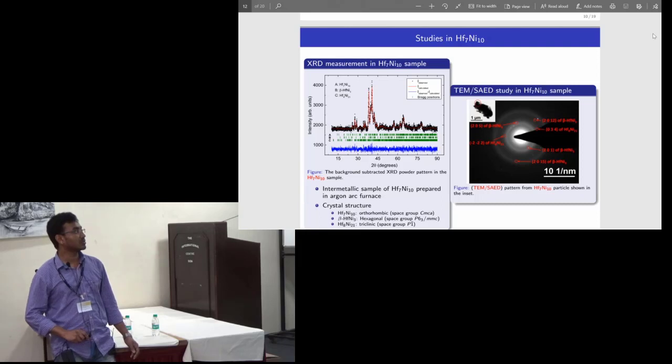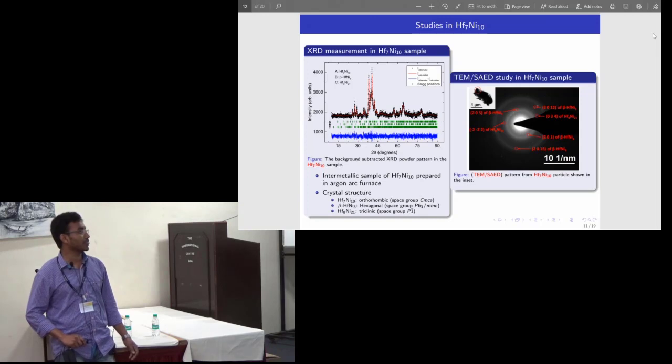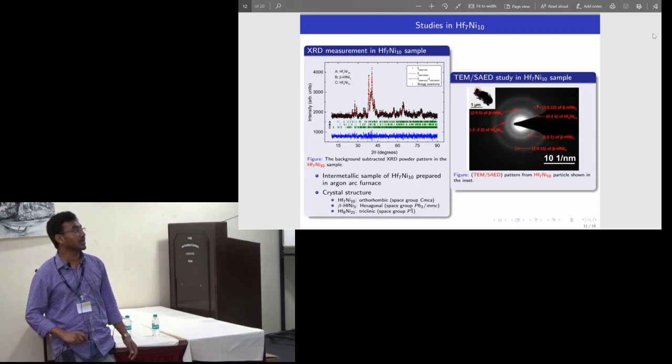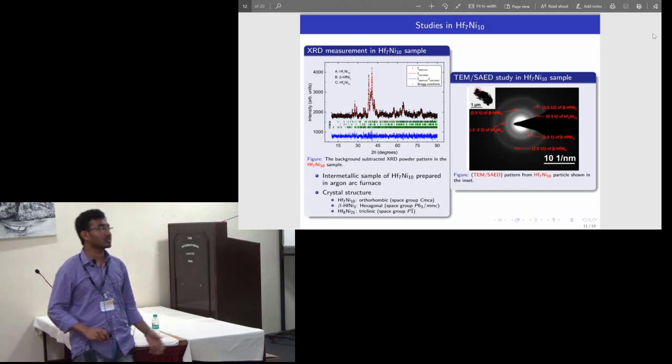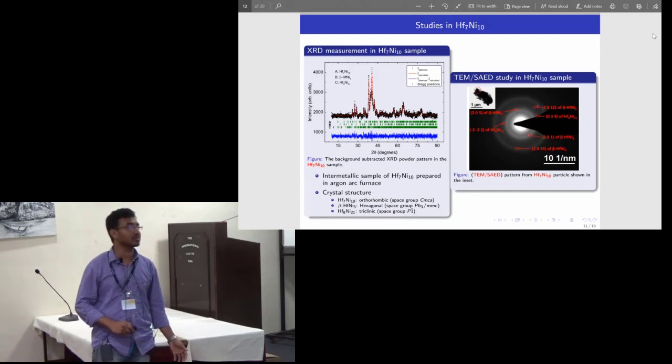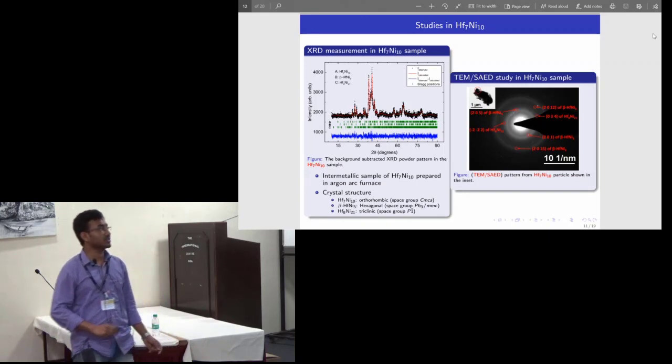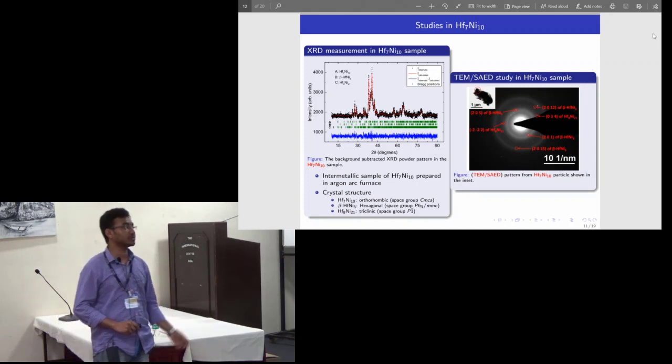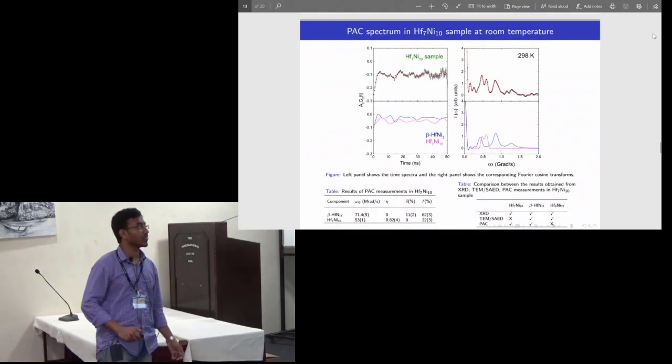In Hf7Ni10 the XRD study shows that there are Hf7Ni10, beta-HfNi3, and Hf8Ni21. In the TEM studies also we have found this beta-HfNi3 and Hf8Ni21, but it could not identify the Hf7Ni10 phase due to the lack of database, that is the HKL versus the interplanar spacing formula. It is actually a profile fitting. We only use the same space group for the Hf7Ni10 as obtained for Zr7Ni10.